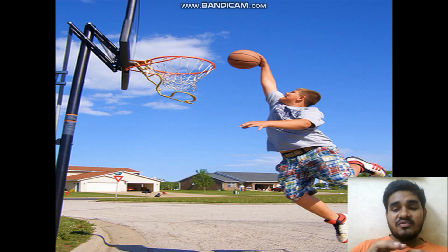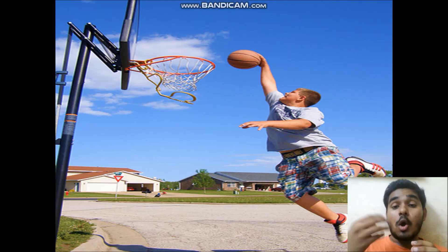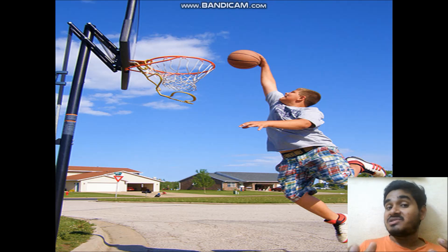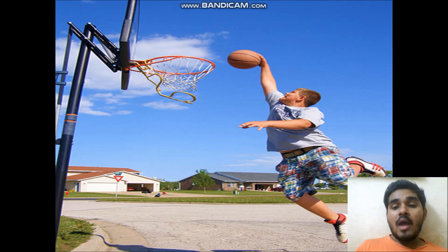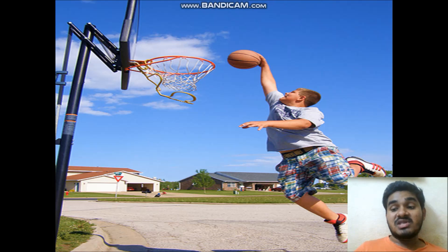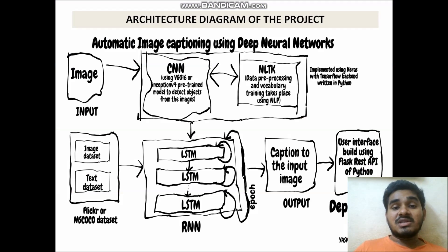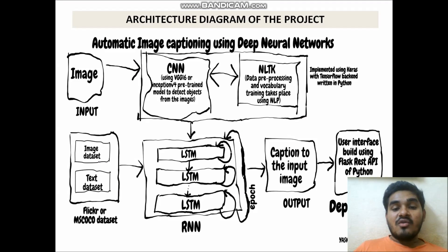In the first phase of captioning, we need to detect what objects are present in the image. By looking at the picture we can clearly see there is a boy, there is a ball, there is a court, and there are some houses. These are the objects present in the image, and using this phase we can detect them.